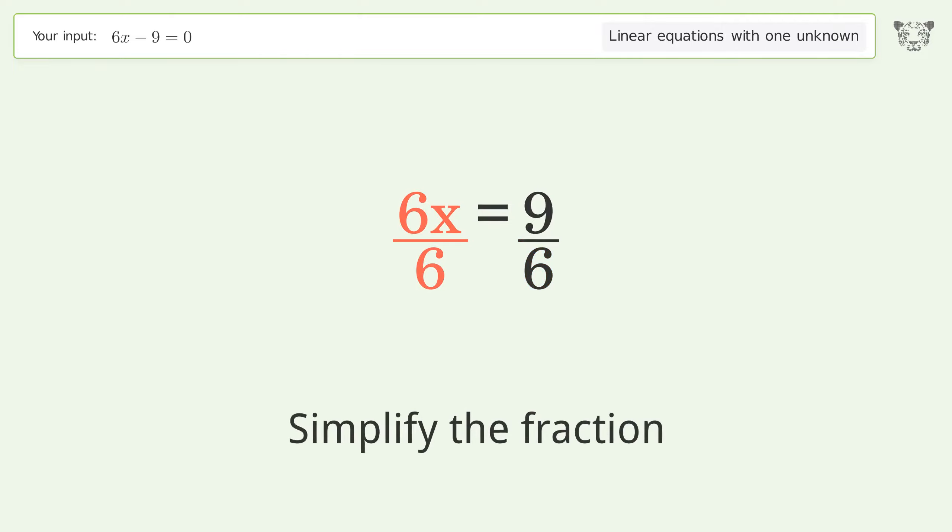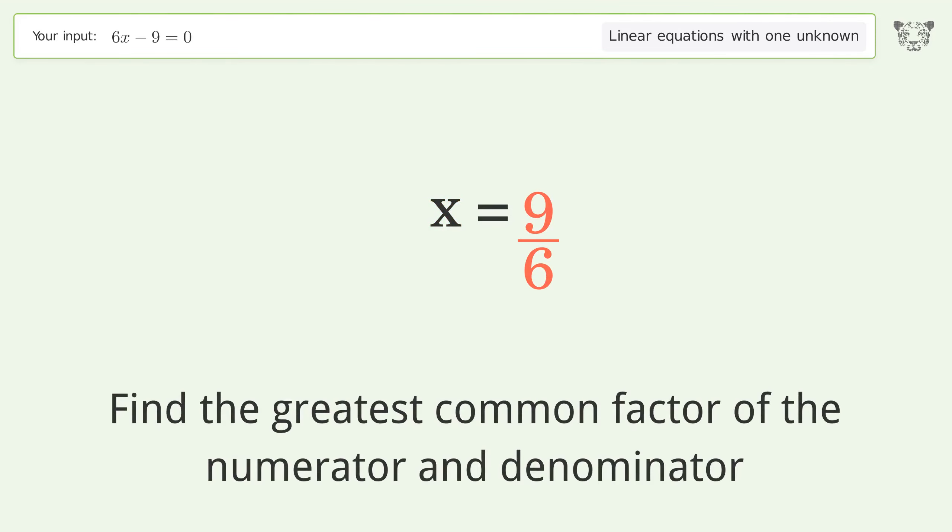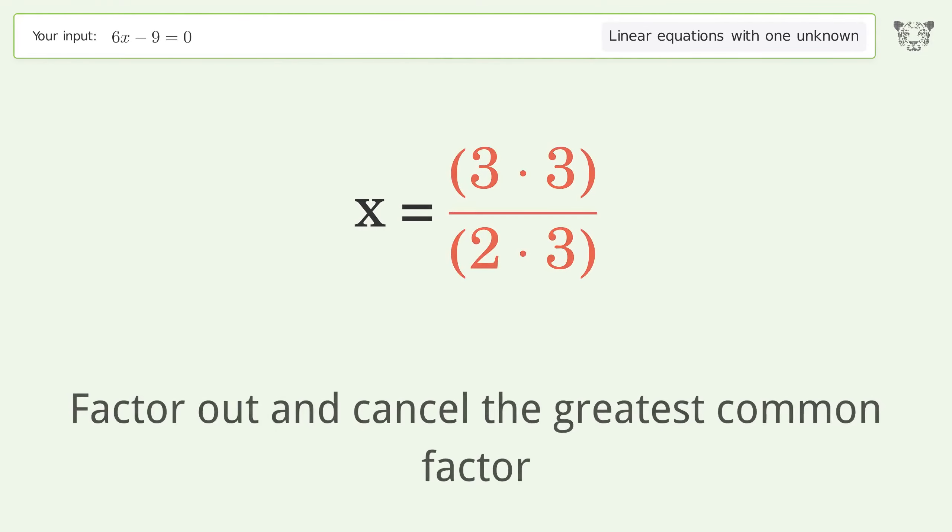Simplify the fraction. Find the greatest common factor of the numerator and denominator. Factor out and cancel the greatest common factor.